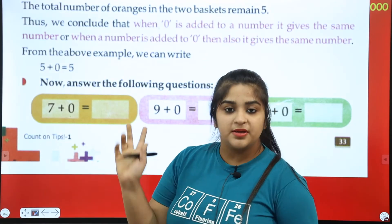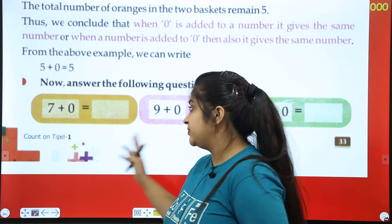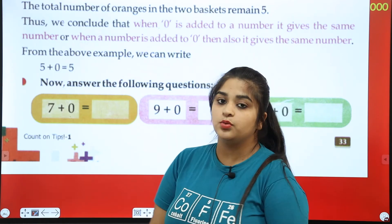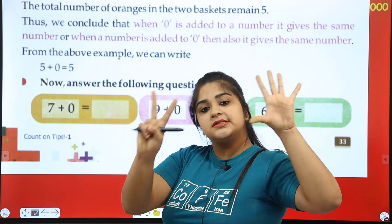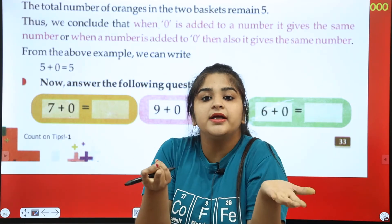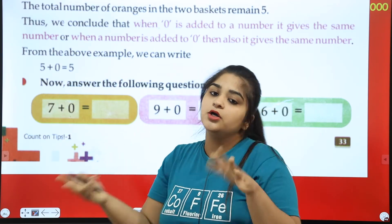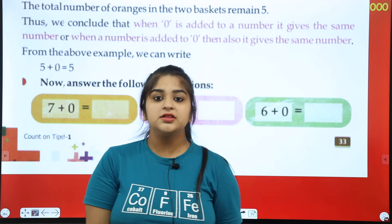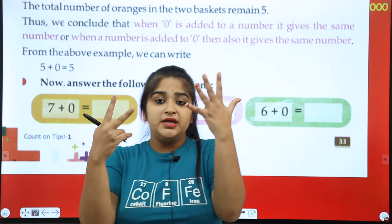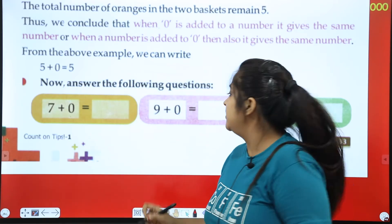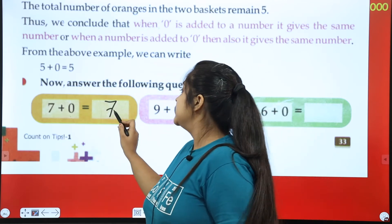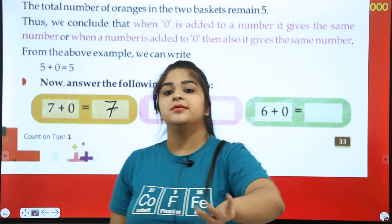On the basis of this concept, we will answer these boxes. 7 plus 0: zero means nothing. So if we add 0 to 7, what will remain? The answer will be 7, because we have not added anything. Zero means nothing, so we have not added anything to 7. So the answer is 7.